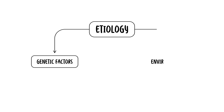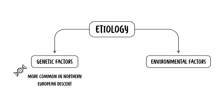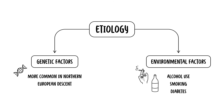The exact cause of Dupuytren's contracture remains unclear, though it is believed to involve a combination of genetic and environmental factors. The condition is more common in individuals of northern European descent and tends to run in families, suggesting a hereditary component. Environmental factors such as alcohol use, smoking, and diabetes have also been associated with an increased risk.